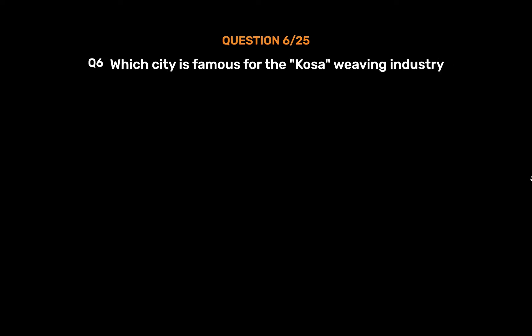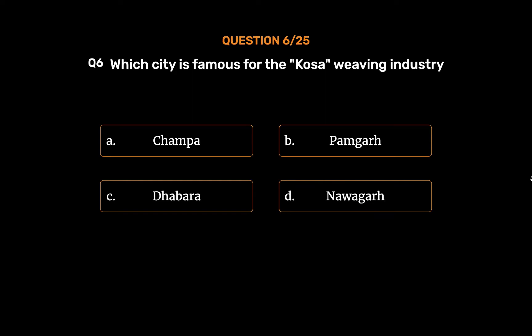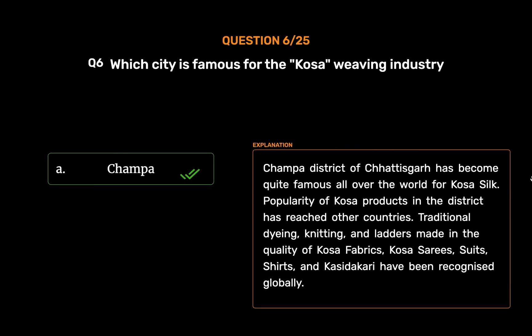Question No. 6: Which city is famous for the Kosa weaving industry? Option A: Champa. Option B: Pamnagadh. Option C: Dabra. Option D: Navagadh. The correct answer is Option A: Champa. Champa district of Chhattisgarh has become quite famous all over the world for Kosa silk. Popularity of Kosa products has reached other countries. Traditional dyeing, knitting, and fabric making in the quality of Kosa fabrics — Kosa saris, suits, shirts, and Kasidakari — have been recognized globally.